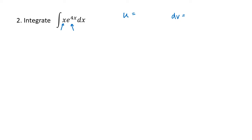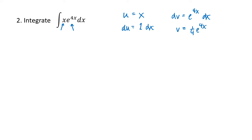The exponential function, similar to the trigonometric functions, basically stays the same if we take its derivative or antiderivative. The derivative of e to the 4x is 4e to the 4x; the antiderivative is one-fourth e to the 4x — all basically the same except for a constant multiple. But x gets easier if you take its derivative and more complicated if you take its antiderivative, so that's the one we should make be our u. We get du = 1 dx, and v is one-fourth e to the 4x.